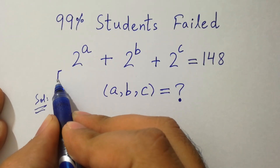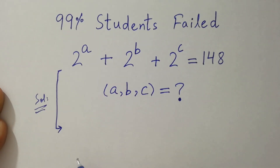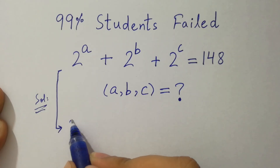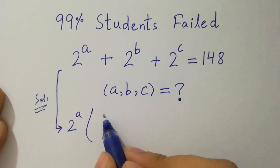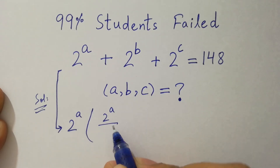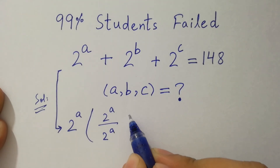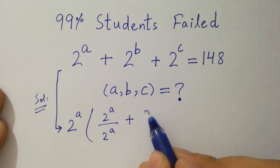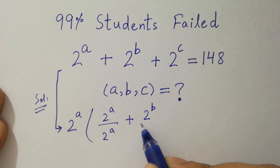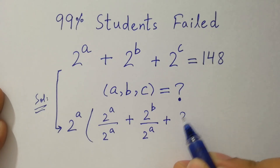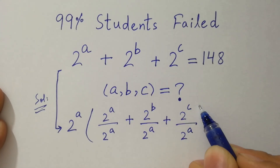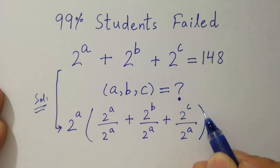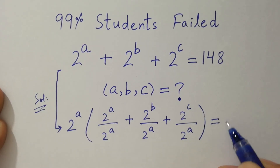To solve this problem, 2 to the power a can be common. Now we have 2 to the power a over 2 to the power a plus 2 to the power b over 2 to the power a plus 2 to the power c over 2 to the power a equal to 148.